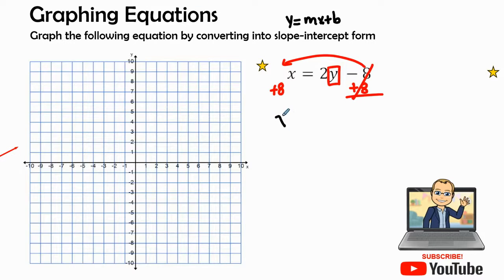So when I rewrite it, I have x plus 8 equals 2y. Now since it's equal to each other, I can switch all the terms on either side around. So I can switch it around. So 2y equals x plus 8.